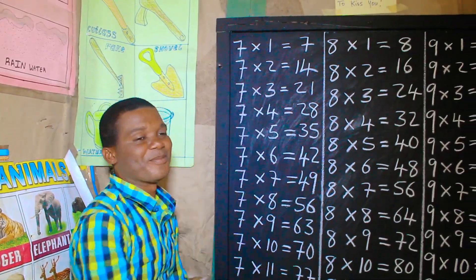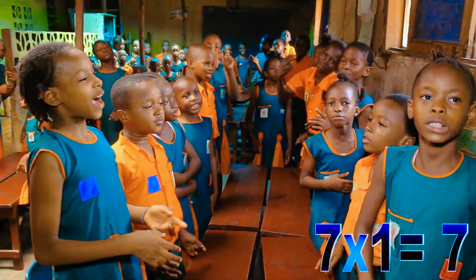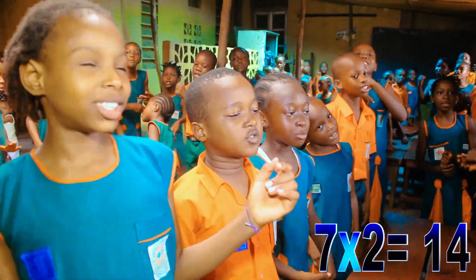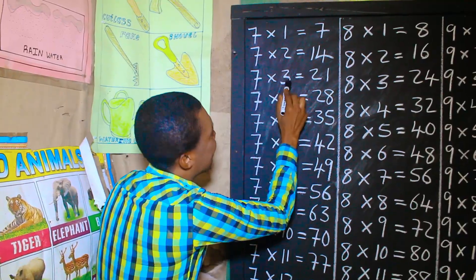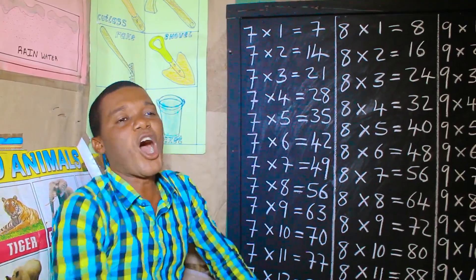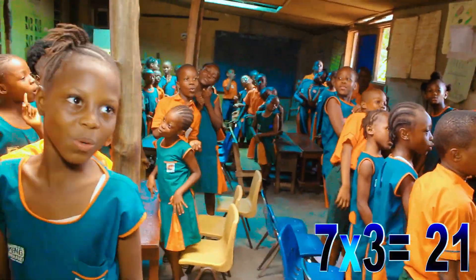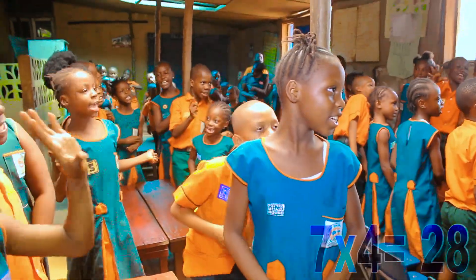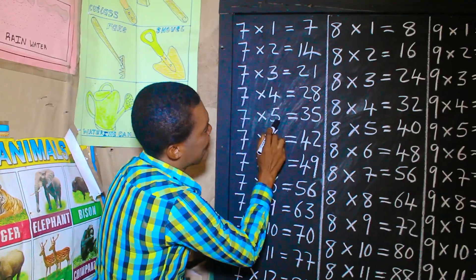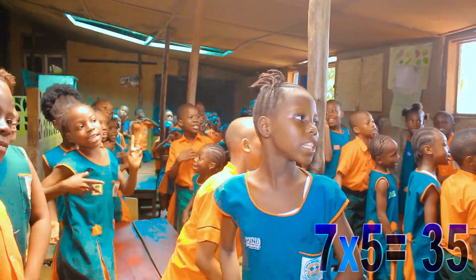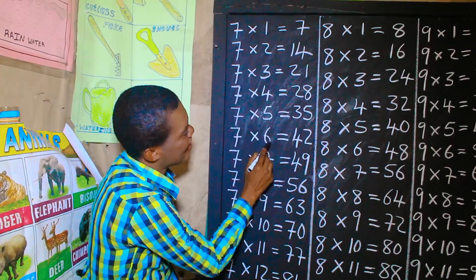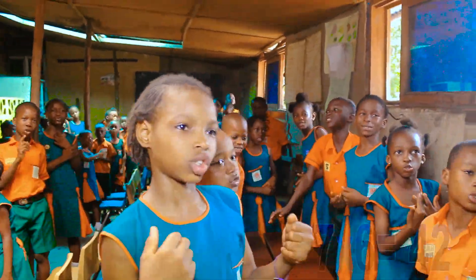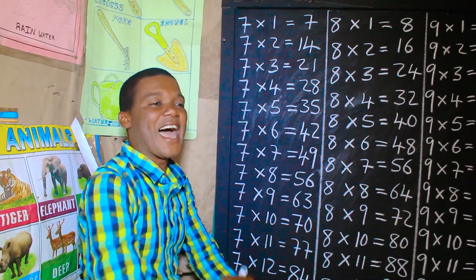7 times 1 is 7. 7 times 2 is 14. 7 times 3 is 21. 7 times 4 is 28. 7 times 5 is 35. 7 times 6 is 42. 7 times 7 is 49.